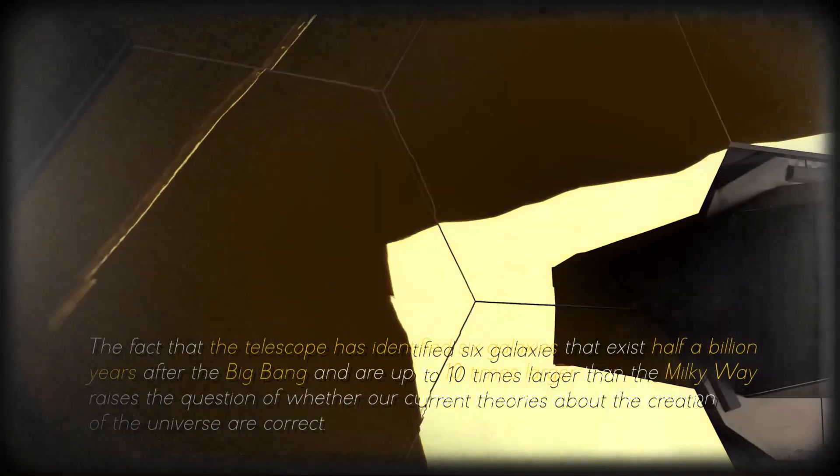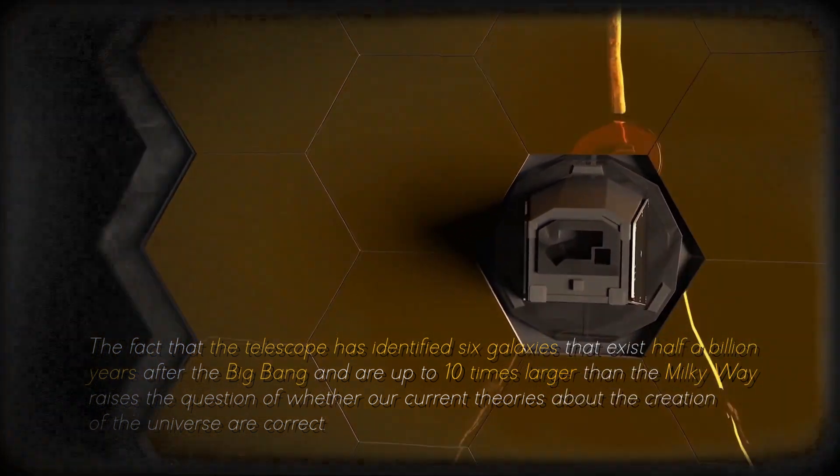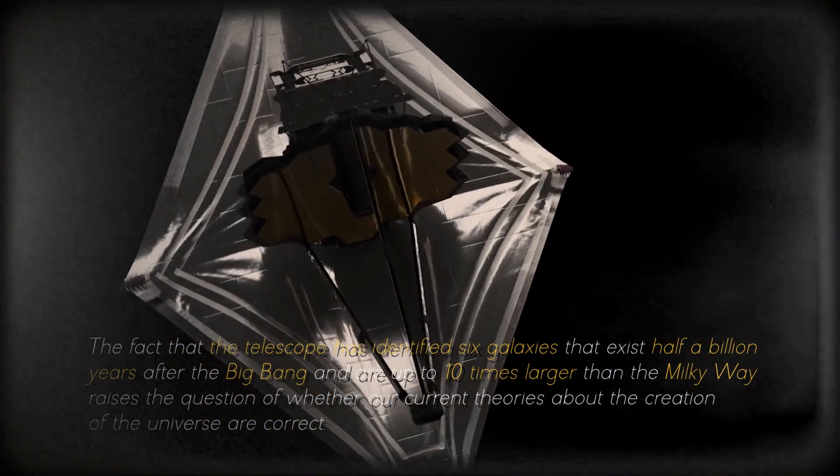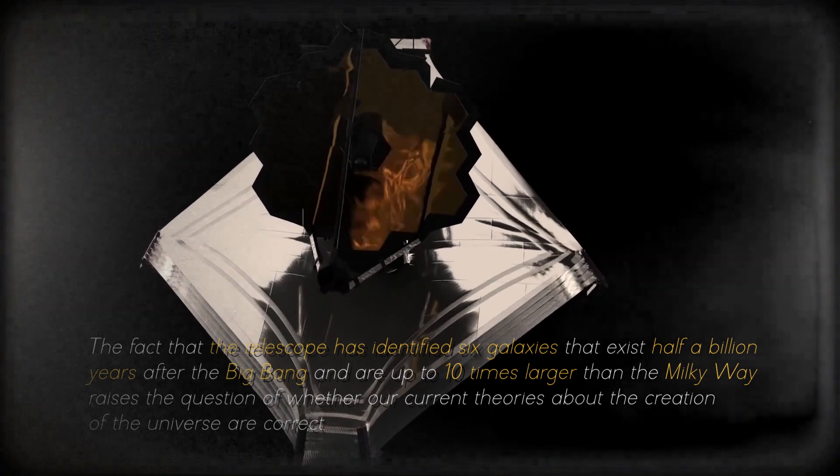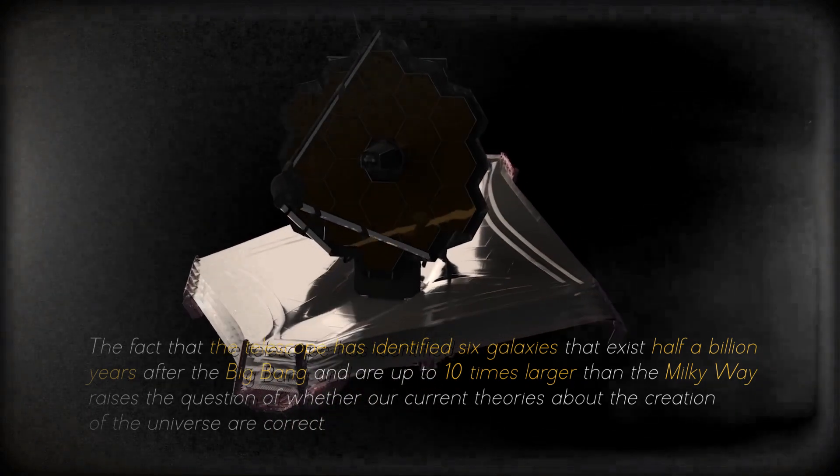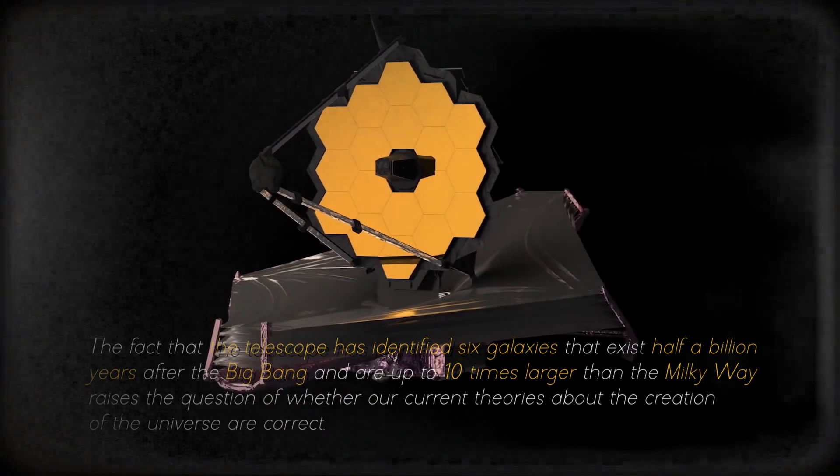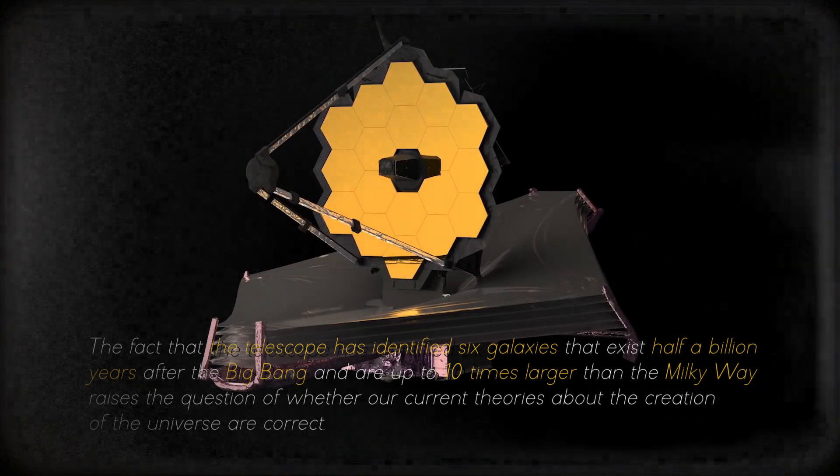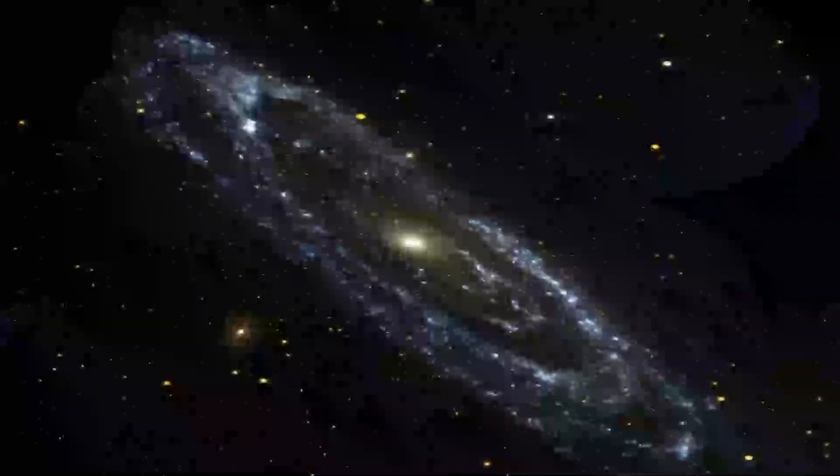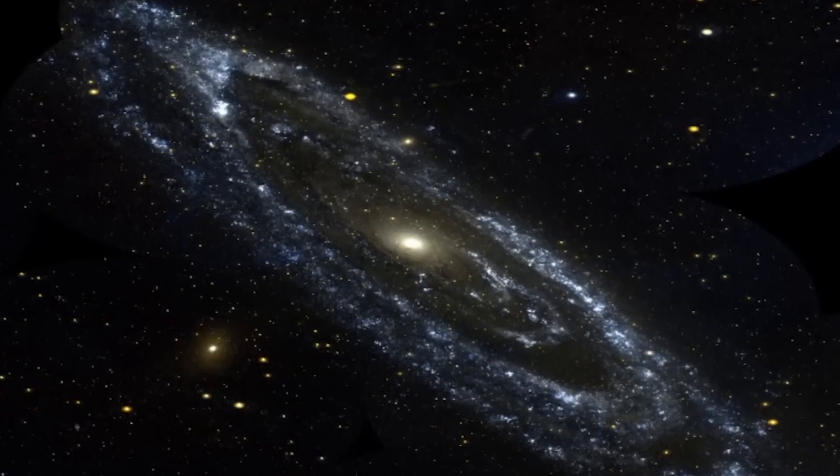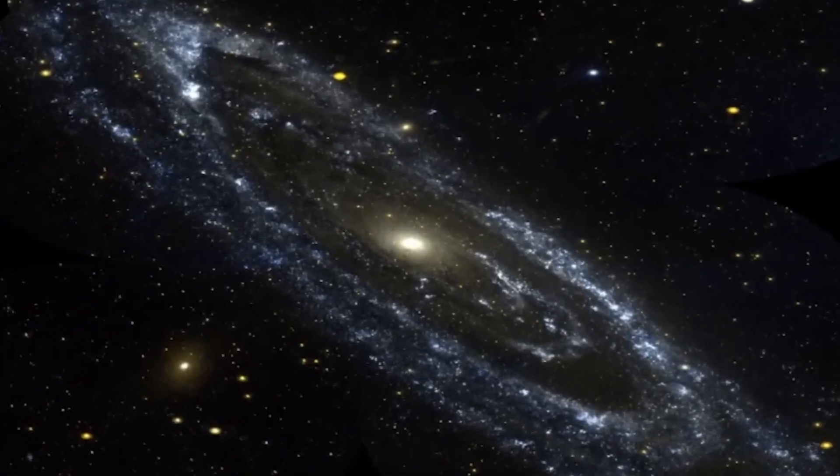The fact that the telescope has identified six galaxies that exist half a billion years after the Big Bang and are up to ten times larger than the Milky Way raises the question of whether our current theories about the creation of the universe are correct. Kaku explained that it takes billions of years to create a galaxy like the Milky Way, so it is strange to find such large, young, primordial galaxies. This discovery may require us to revise and rewrite textbooks on the beginning of the universe.